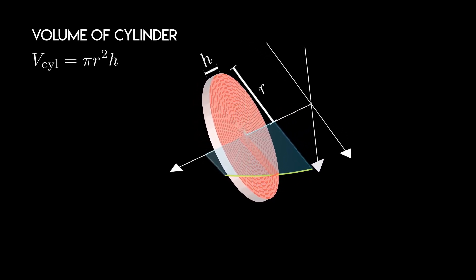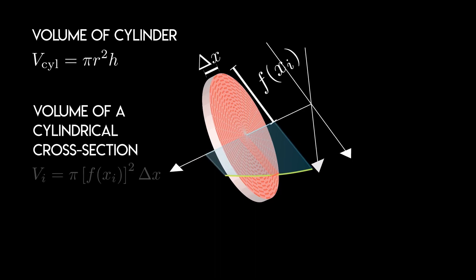Which is given by pi times the square of the radius multiplied by its height. In our disk, the radius is given by the value of the function at x sub i, or f of x sub i. The height will be given by delta x, and so the volume of this cylindrical cross section will be pi times the square of f of x sub i times delta x.